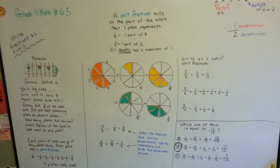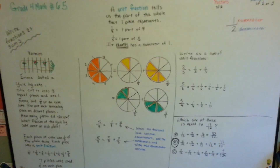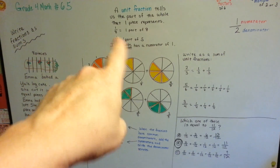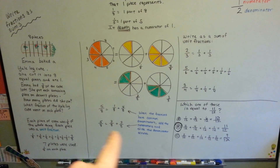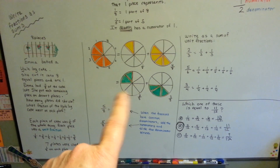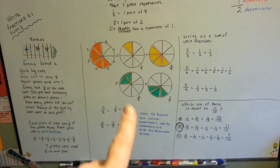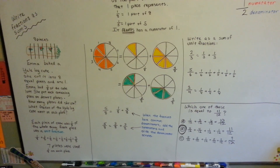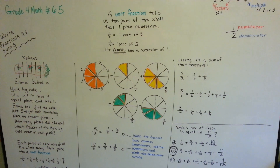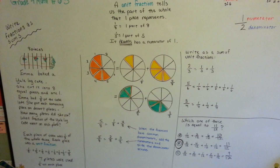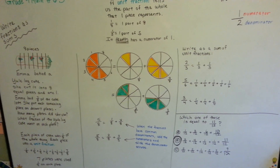Remember that a unit fraction always has 1 as a numerator. It represents part of a whole and how many parts it was split into — 1 eighth is 1 part of 8. When adding like denominators, common denominators, just slide the denominator across past the equal sign and add the numerators. We're going to continue talking about fractions, so I'll see you in the next video. Keep up the good work — I believe in you, you can do this. Bye!